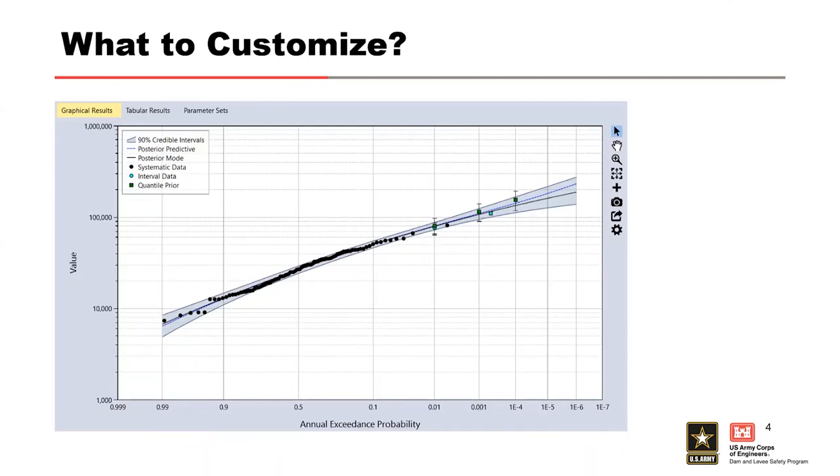Label the y-axis, give it a title. Get rid of the icons on the right in your screenshot. Change the range. You could change the quantile priors colors or how they're represented.